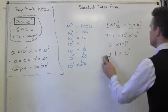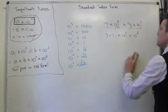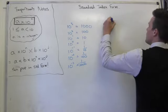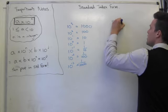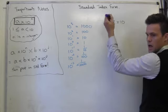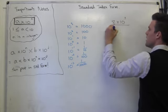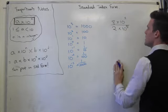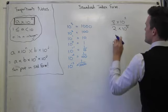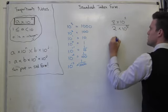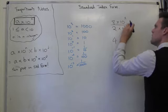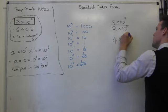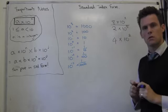This works exactly the same with division. We have 8 times 10 to the 7 divided by 2 times 10 to the 5. 8 divided by 2 is 4. 10 to the 7 divided by 10 to the 5 is 10 to the power of 2. And we're done: 4 times 10 to the 2.